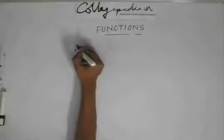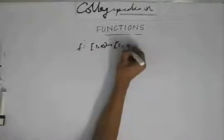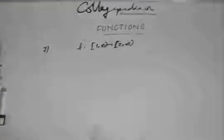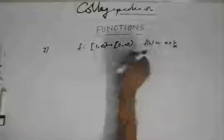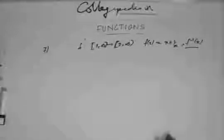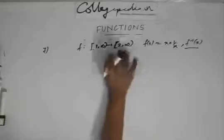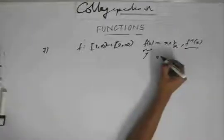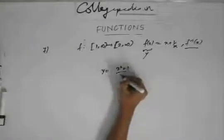The first question on inverse functions — this is a question asked in IIT JEE. This is the seventh question overall. The function is defined as f(x) = (x² + 1) / x. We are asked to assume the function is bijective and find f⁻¹(x). The approach is to find x in terms of y. Let y = (x² + 1) / x.